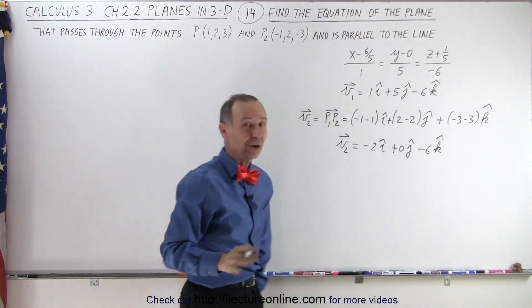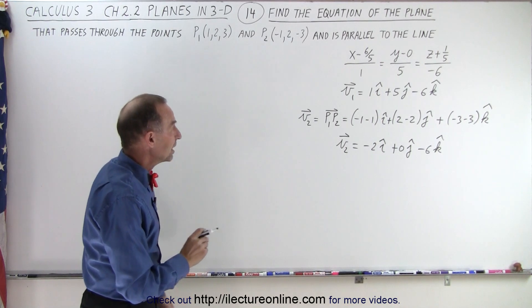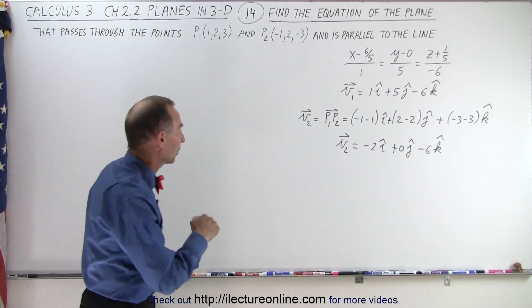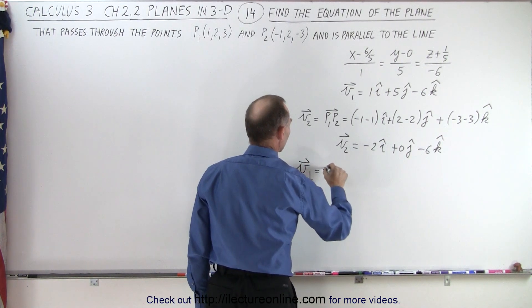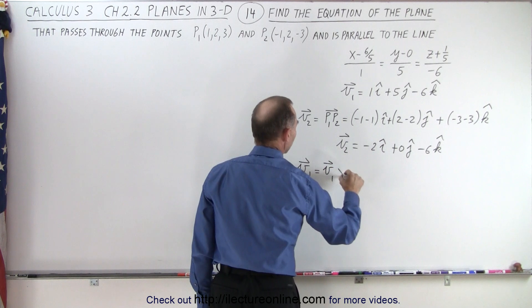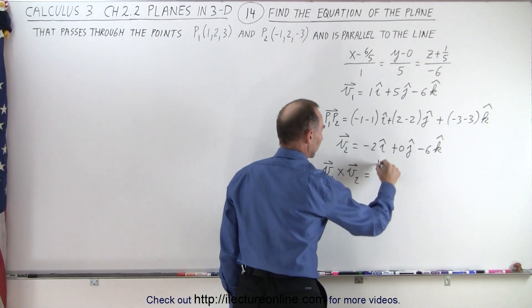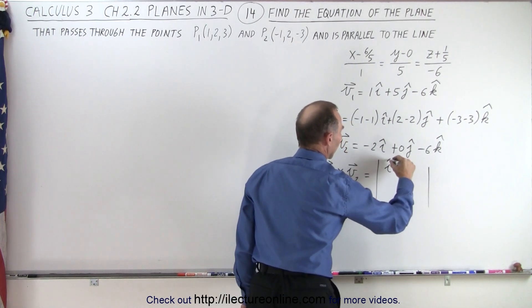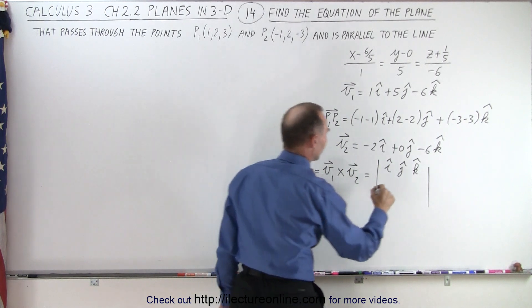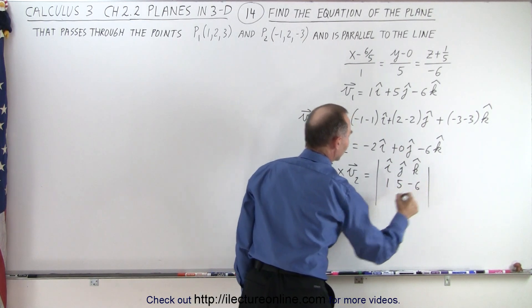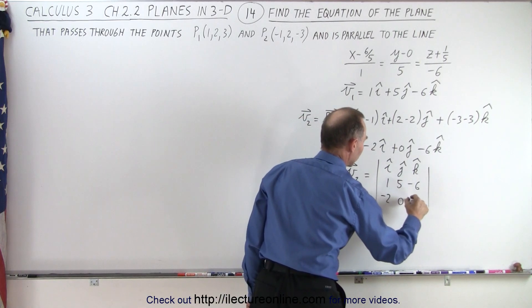Since we're going to take the cross product, we like zeros because that makes it a little bit easier. Now we need to find the perpendicular vector to the plane, which is equal to the cross product of Vector 1 and Vector 2. So, let's take that cross product. This is equal to i, j, k — the coefficients of the first vector: 1, 5, and negative 6 — and the coefficients of the second vector: negative 2, 0, and negative 6.